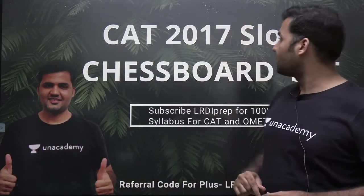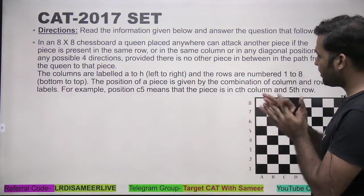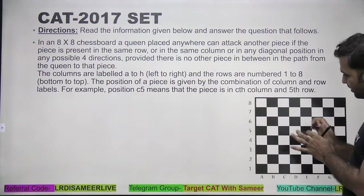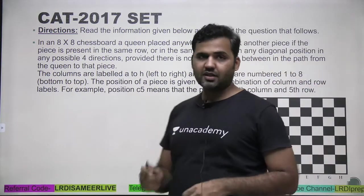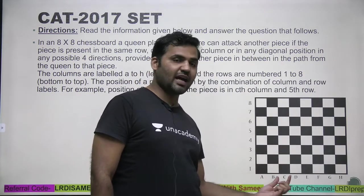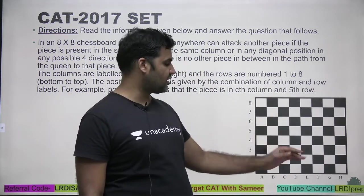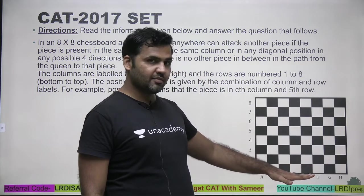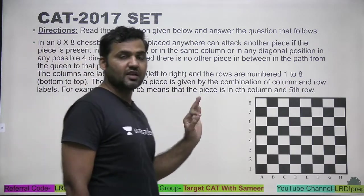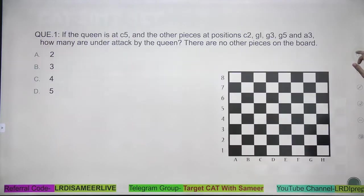Hello everyone, welcome back. Welcome to CAT 2017 slot 1 chessboard set. In the first part, I discussed the first two questions with you. I gave you the basic instruction on how to approach the set. You should know the position of the pieces on the board. The position of a piece is represented by the column followed by the row number. We have covered the instructions in the previous video.